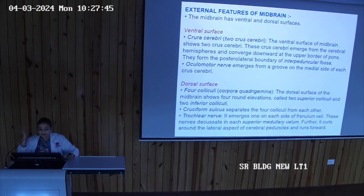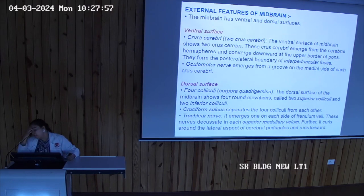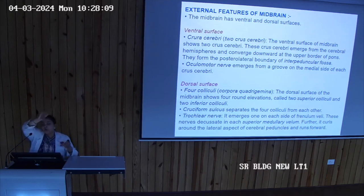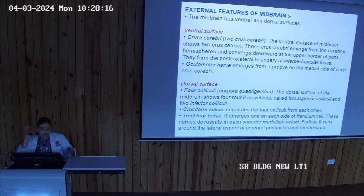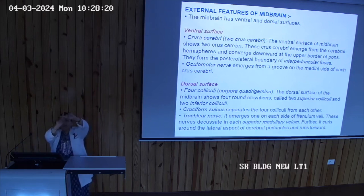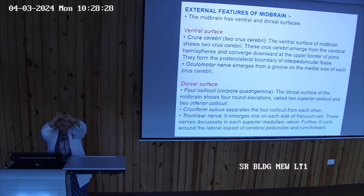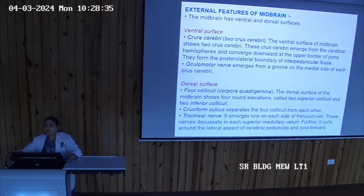On the dorsal surface: there are four colliculi known as the corpora quadrigemina — superior and inferior on each side. They are separated by a cruciform sulcus, which is cross-shaped, dividing the posterior aspect of the midbrain into four quadrants for the four colliculi. 'Colliculus' is singular and 'colliculi' is plural.